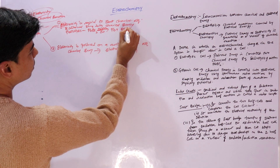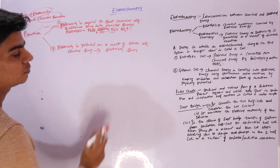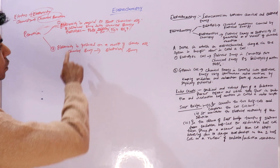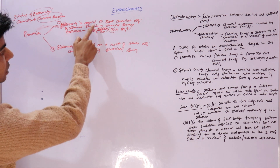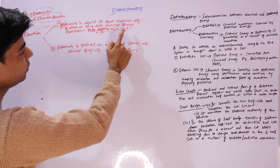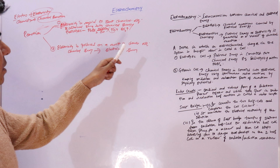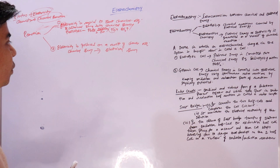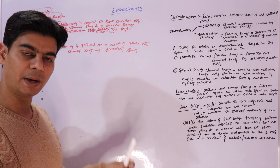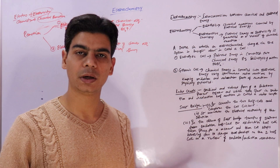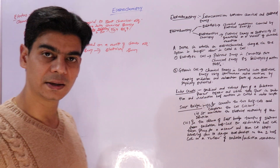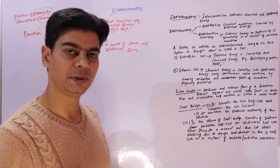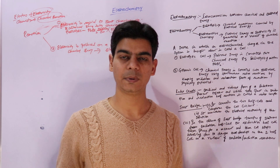In the electrolysis of molten lead bromide, lead is obtained at the cathode and bromine is obtained at the anode. Here, electrical energy is used to start the chemical reaction — the decomposition of lead bromide into lead and bromine gas. So electrical energy is converted into chemical energy. This arrangement — with a battery, cathode, anode, and electrolyte — is called an electrolytic cell or voltameter.